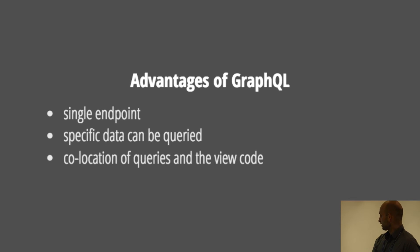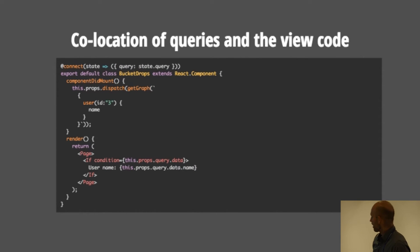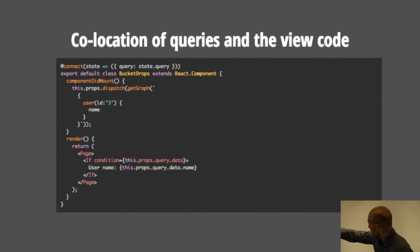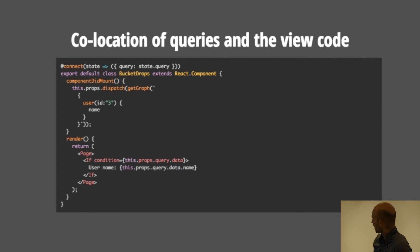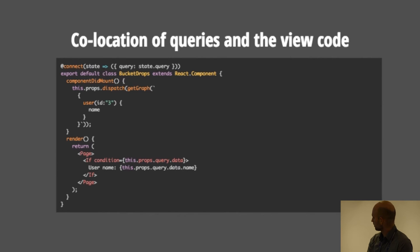Co-location of queries and the view code is something that is useful if you manage the data. In the example here, in the lower section there's a bit of JSX where you write out the user name, and in the top section you request the user name. If you would need any other property from the user you would just add another property and request it — and it's that easy. I think that's a pretty good thing that speaks for GraphQL.